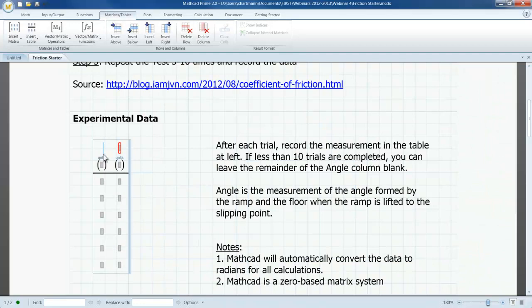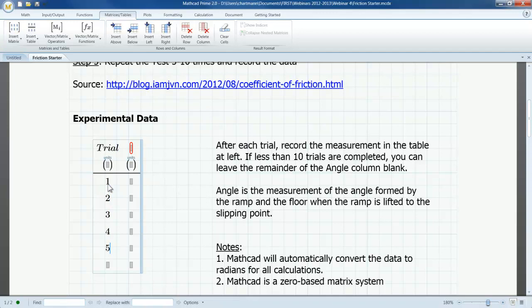In this example, I will create a column called Trial, which will be unitless. I can add values for Trial to the column simply by typing and using the down arrow. At this point, it is helpful to point out that MathCAD uses a zero-based matrix addressing.